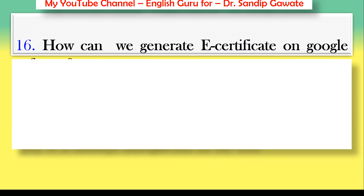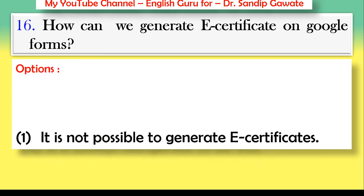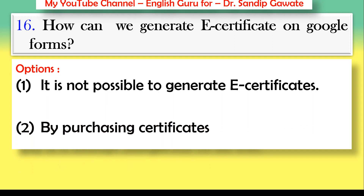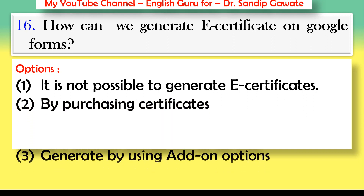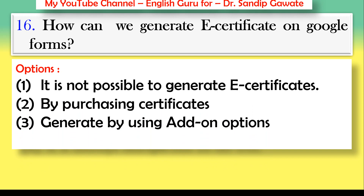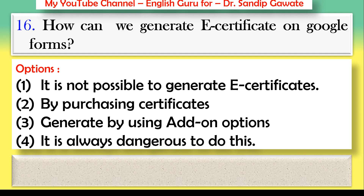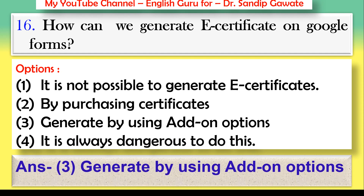Question 16: How can we generate an e-certificate on Google Forms? Options: it is not possible, by purchasing certificates, generated by using add-on options, or it is always dangerous. The correct answer is option number three — generated by using add-on options.